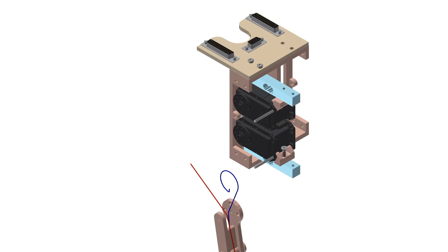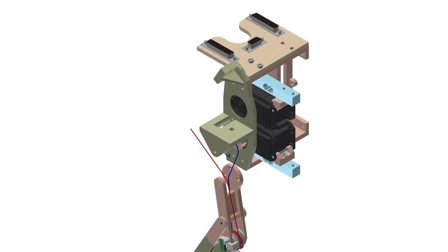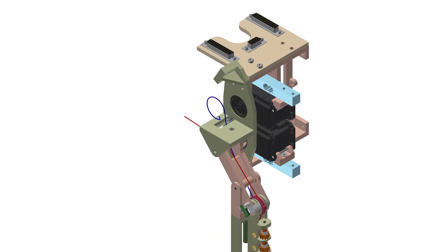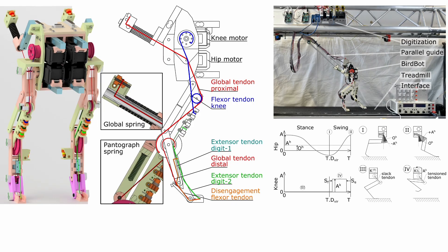BirdBot features two motors in each leg. The hip motor drives the leg forward and backward. The knee motor flexes the leg in leg swing. Leg extension in stance is only provided by the global spring inserting into the global tendon.